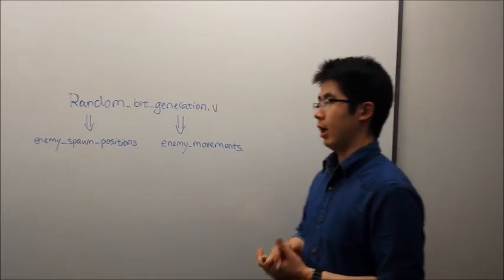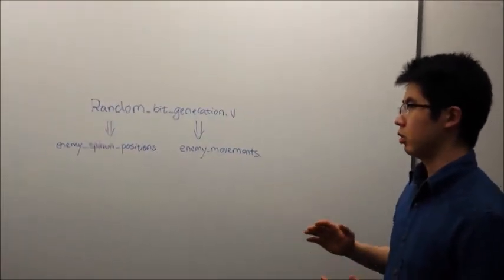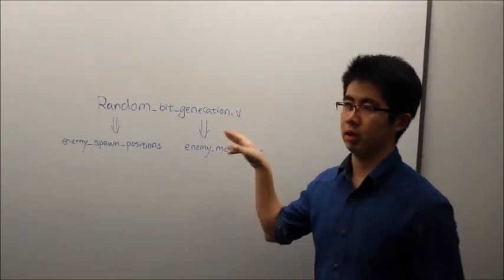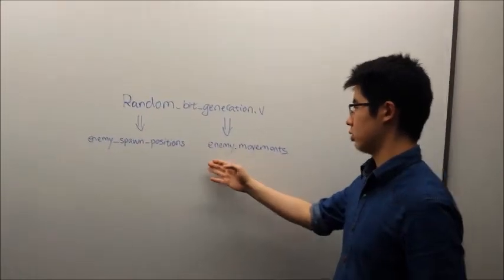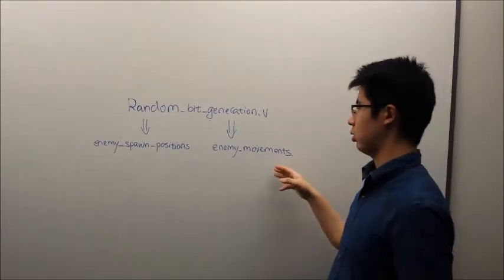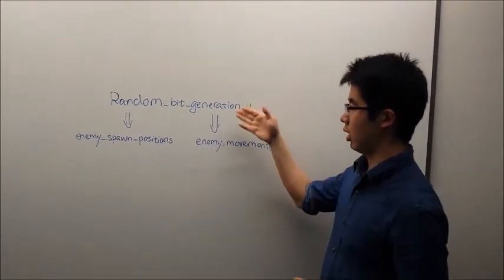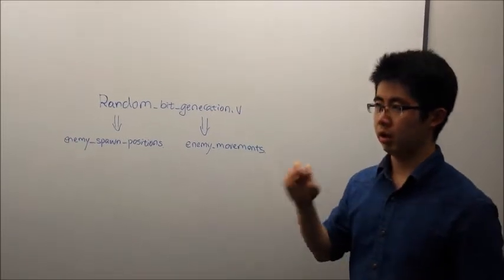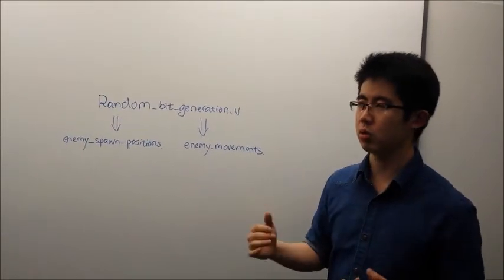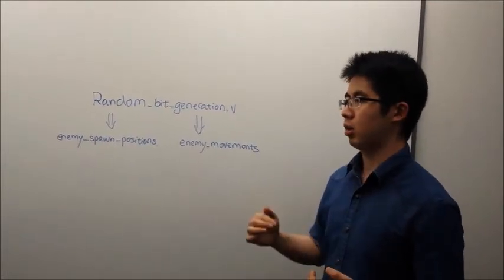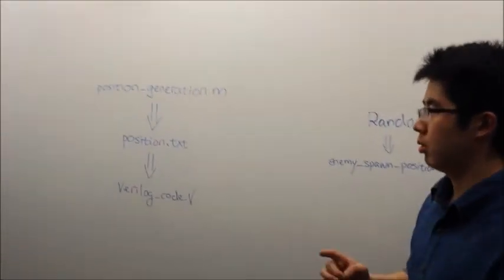Now I am going to talk about my enemy AI system. In enemy AI system I have included a random bit generation which we learned in class using LFSR, and generate the enemy spawn positions and also the enemy move. Also included into the enemy movements. In the enemy movements I include two parts: one is from the random bit generation and also another part is from the deterministic that is pre-stored inside of the Verilog code.